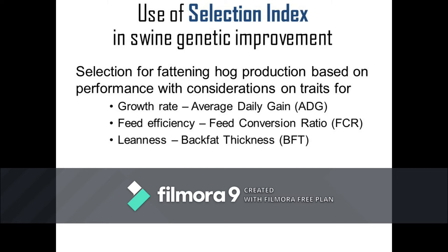Feed conversion ratio or FCR tells us how many kilograms of feed is consumed in order for the animal to gain a kilogram of live weight. Lower FCR values are desired as animals with lower FCR are considered more efficient in converting feed to an equivalent weight gain. The back fat thickness or BFT indicates the thickness of fat at the back of the animal at the level of the last rib. Lower BFT values are desired as carcasses of animals with lower BFT have more lean yield than those with higher values.